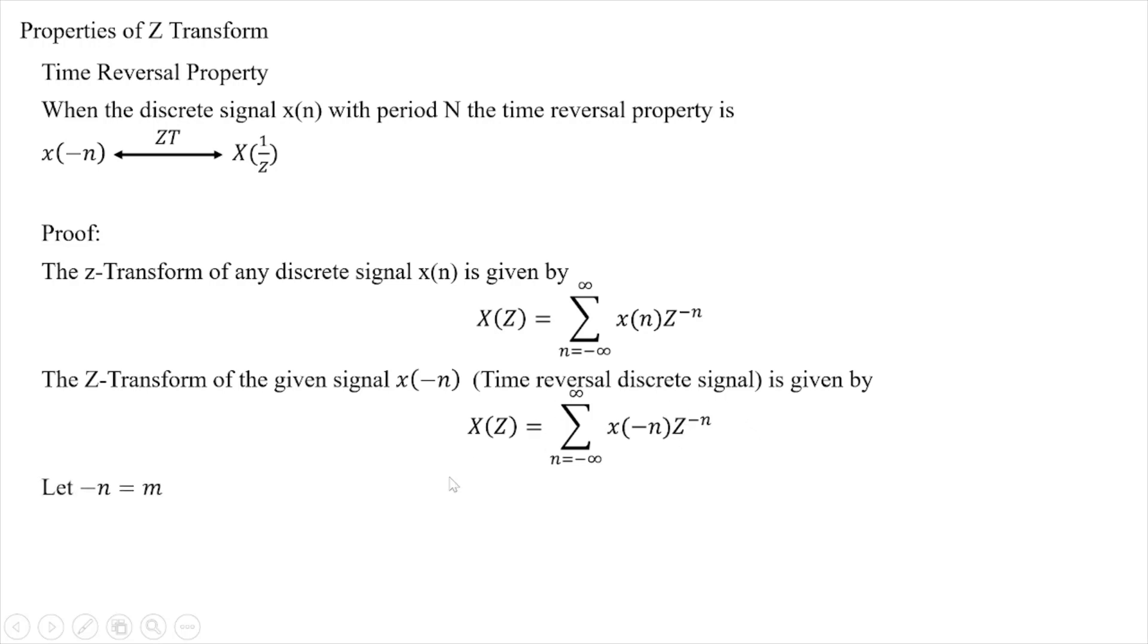Let negative n equals m. Then X(z) equals summation m equals minus infinity to plus infinity of x(m)z^m.